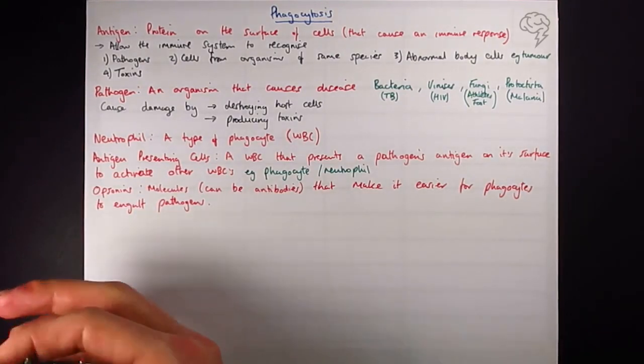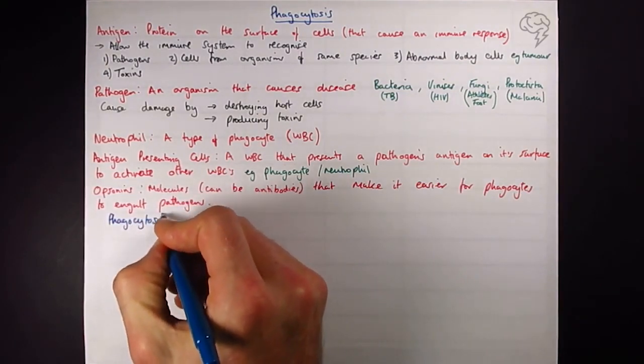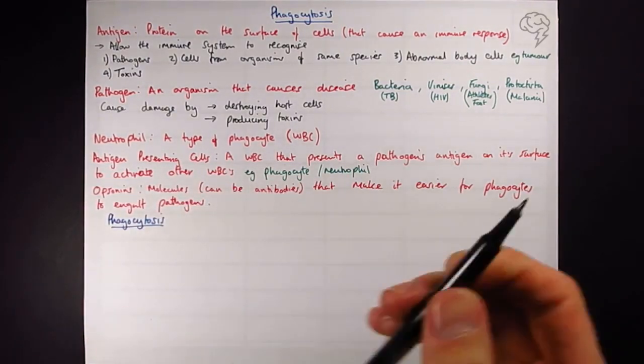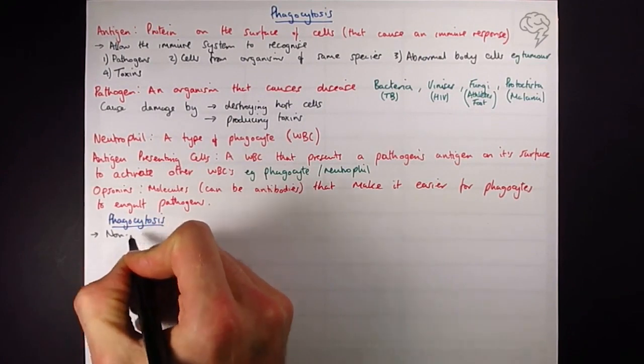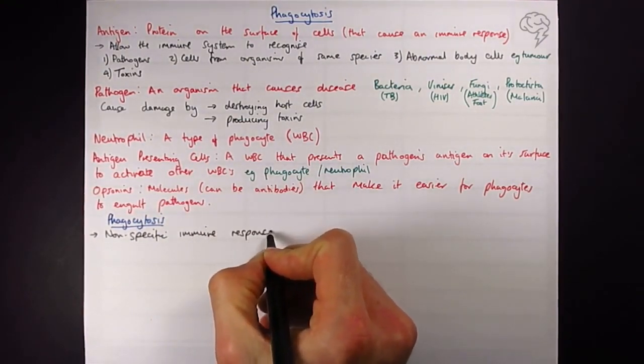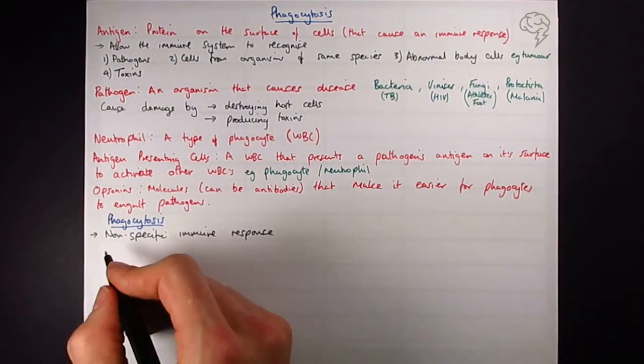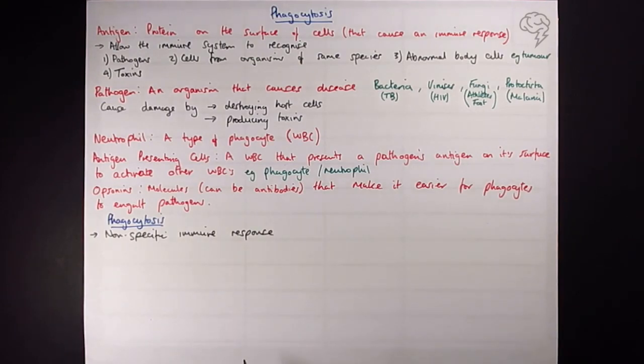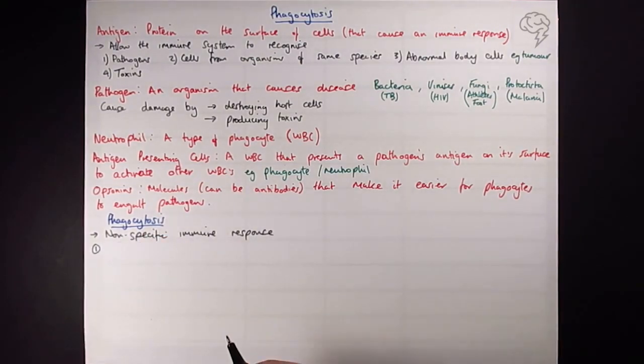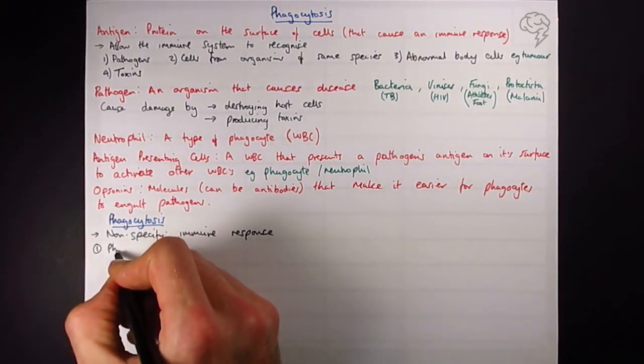Let's get down to phagocytosis itself. It's a non-specific immune response, so it doesn't require the pathogen to have a specific type of antigen, so we call it non-specific. It's like the first line of defense basically. The good news is there's not too much writing to go with the diagrams. Step one: the phagocyte binds to the foreign antigen on the pathogen.